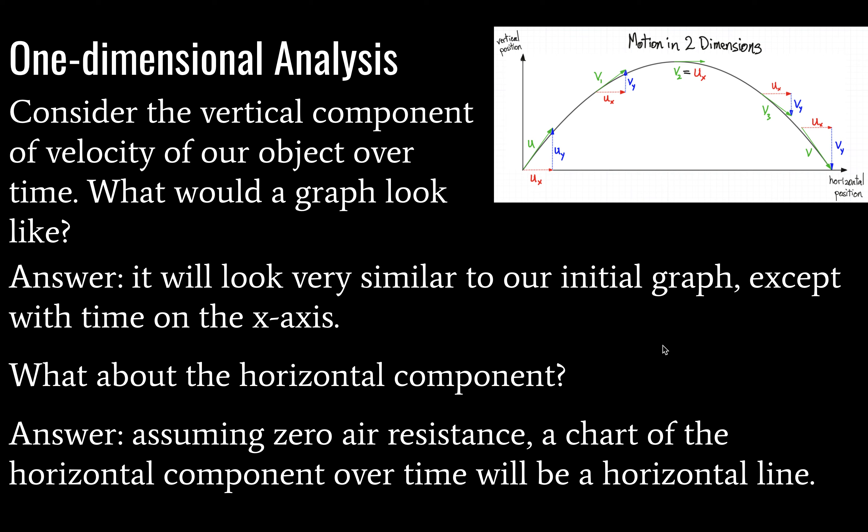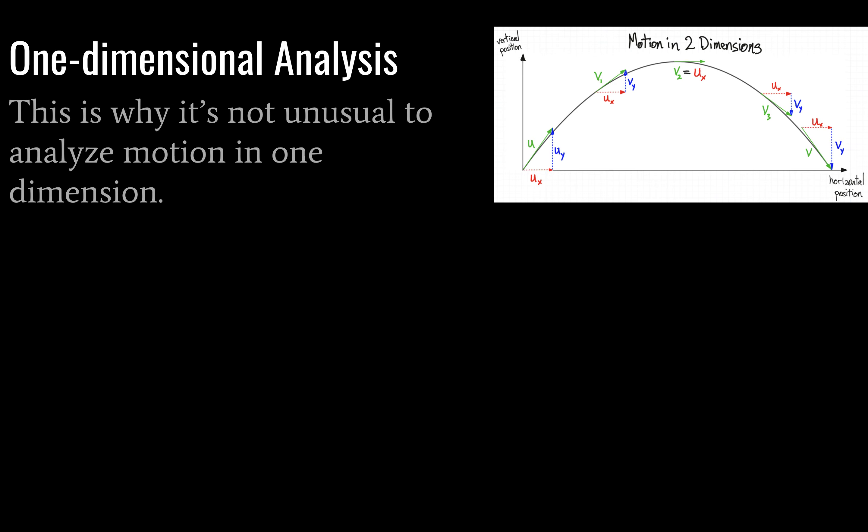Well, again, assuming zero air resistance, the chart of the horizontal component over time is just going to be a horizontal line. It's going to be constant, right? So this is one of the reasons why we go in for one dimensional analysis. It's not particularly useful to look at the horizontal component if it's constant all the way through.